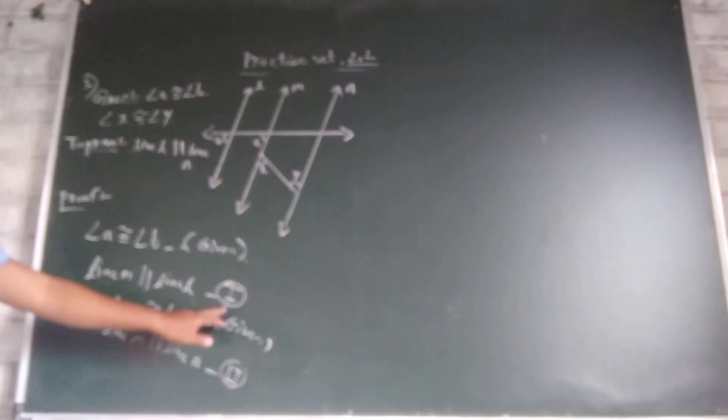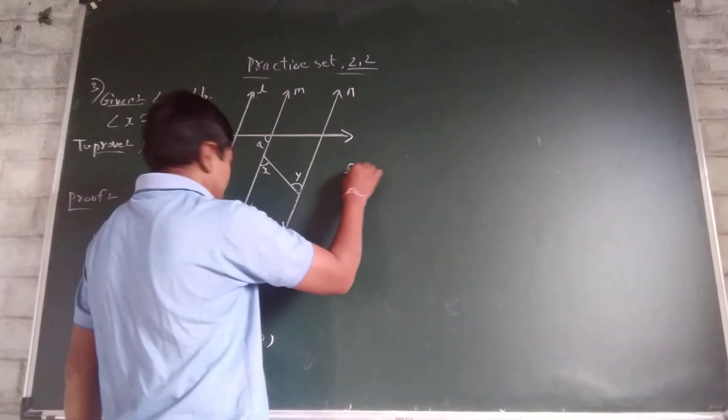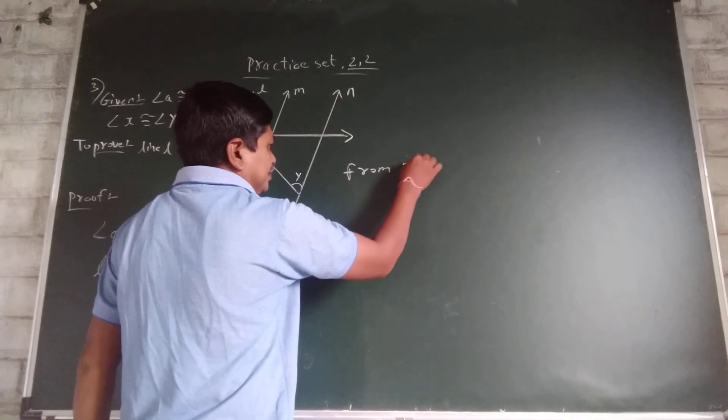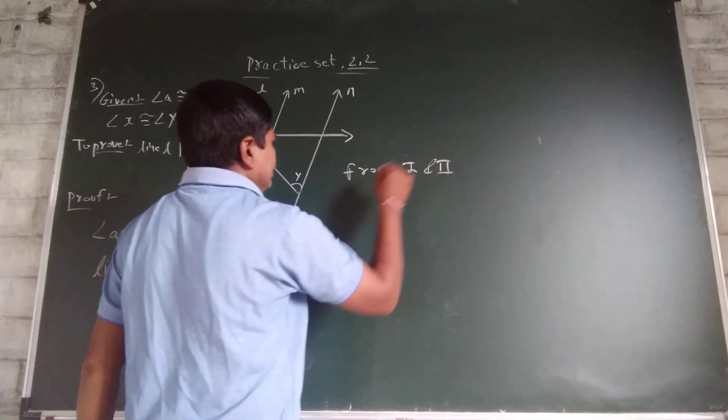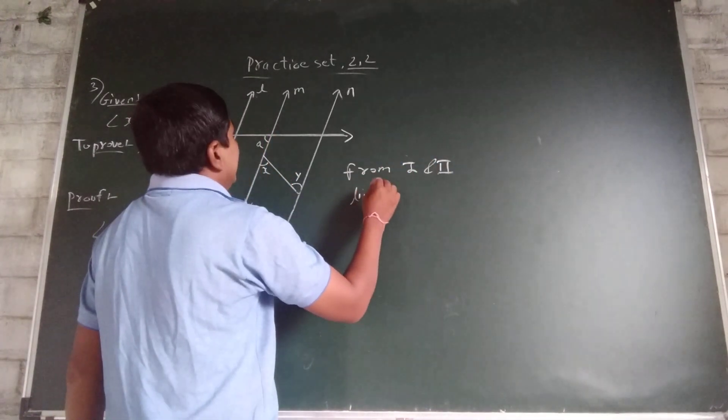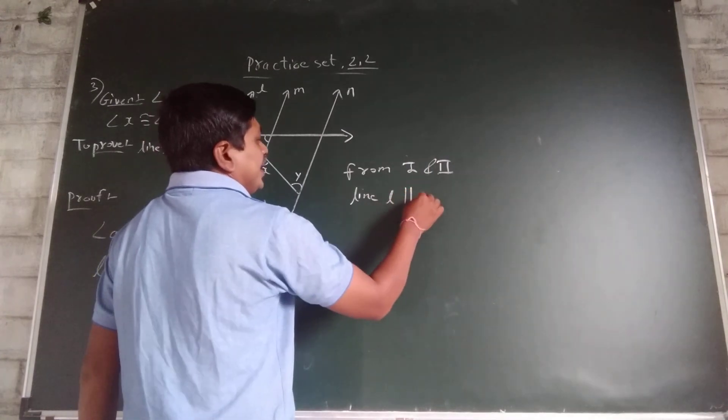From equation 1 and 2, line M parallel to L. Here M is common. Therefore, line L is parallel to line N. From equation, line L parallel to N.